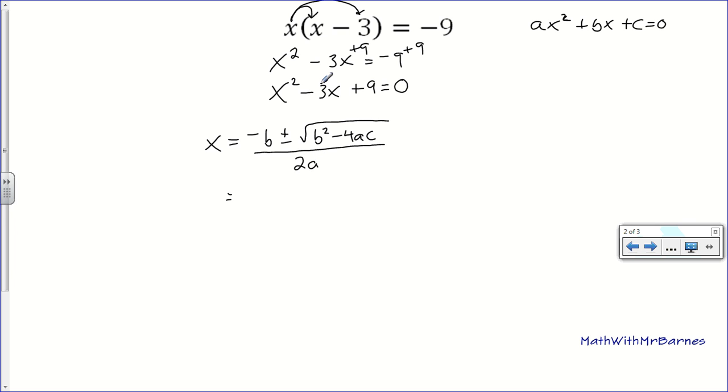So, my negative b, so this is my b value. Some of my students like to write out what my a is. Well, my a in this case is 1. There's no number in front of the x squared, so it's just 1. My b is negative 3. And my c value is 9.